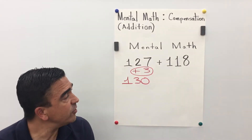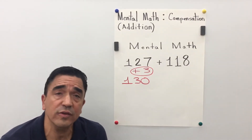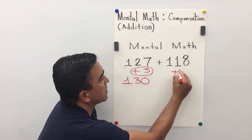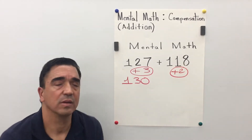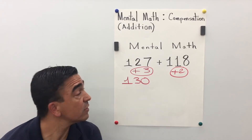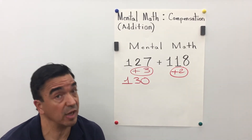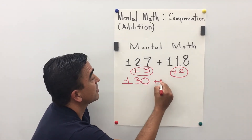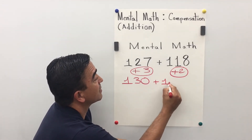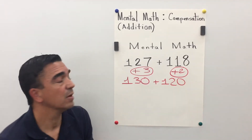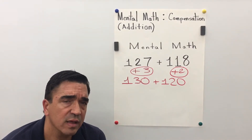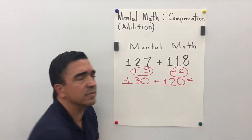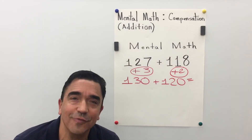I'm going to add 2 to the 118, which makes 120, because 118 plus 2 is 120. Then 130 plus 120 equals 250.